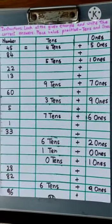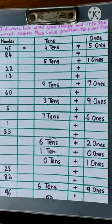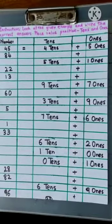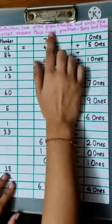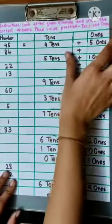Today, we are going to solve page number 22 of Maths Workbook. Instructions: Look at the given example and write the correct answers. Place value practice, tens and ones.